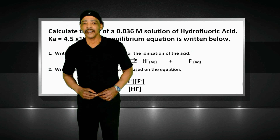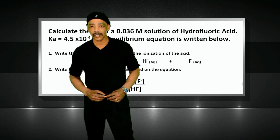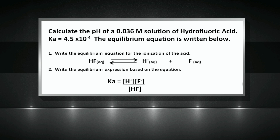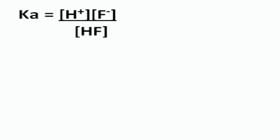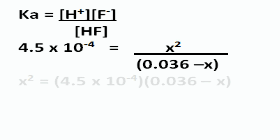Now let's observe how to calculate the pH of a weak acid using the quadratic equation and the quadratic formula. Returning to the Ka expression and assuming that X must be used in the calculation, this generates: 4.5 times 10 to the minus 4 equals X squared divided by 0.036 minus X. Solving for X squared gives X squared equals 4.5 times 10 to the minus 4 times (0.036 minus X).